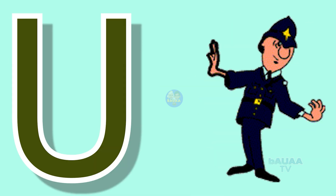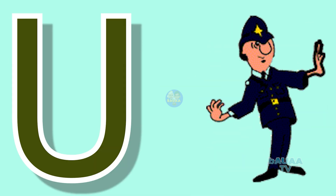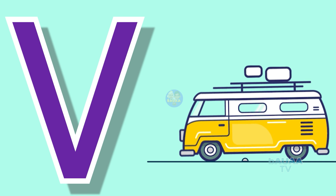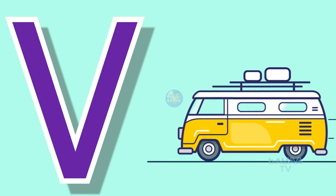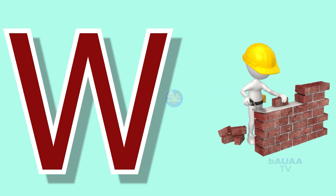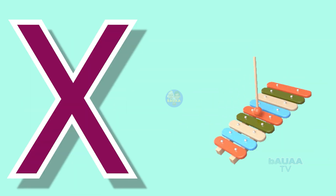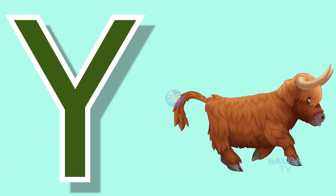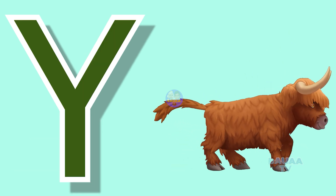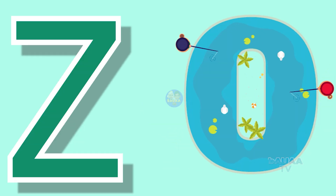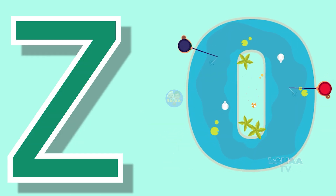T for tomato, U for uniform, V for bear, W for wild, X for xylophone, Y for yard, Z for zero.